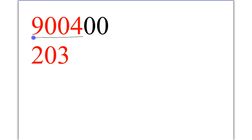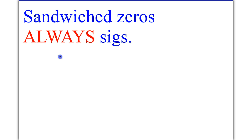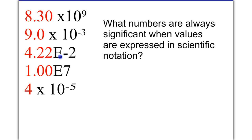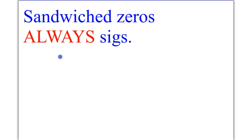Here we're looking at 9, 0, 0, 4 as the significant numbers. These are trailing with no decimal present, so they are not significant. The zeros are considered significant because they are sandwiched in between the 9 and the 4. Same thing with this zero — it is sandwiched between the 2 and the 3. So sandwiched zeros are always significant. They are sandwiched between two non-zero numbers.